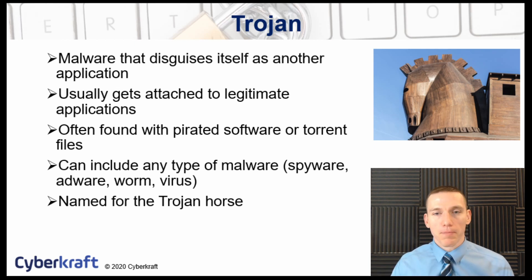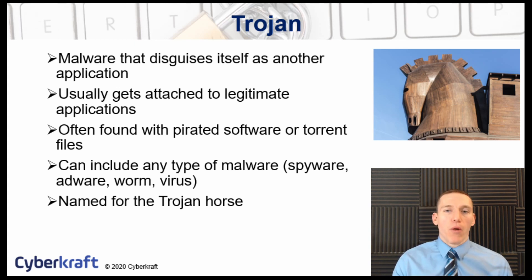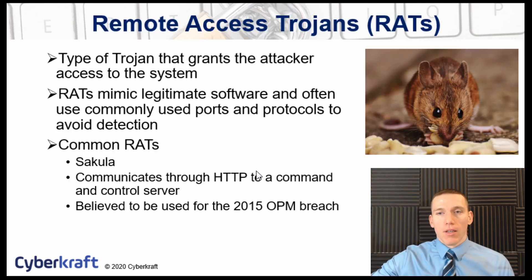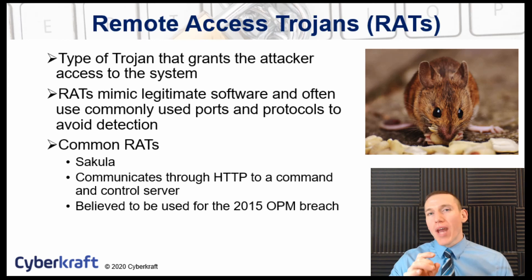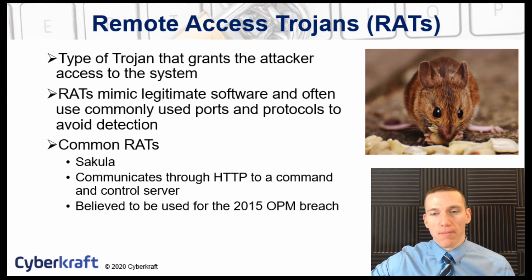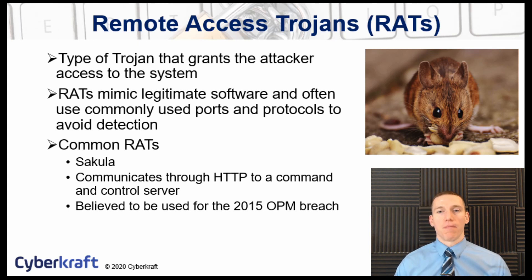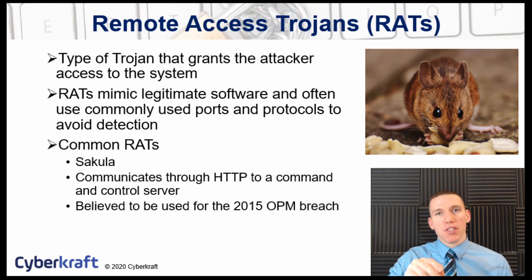Trojans can include any type of malware — spyware, adware, worms, or viruses. A Remote Access Trojan, or RAT, is a specific type of Trojan designed to grant an attacker access to a target system, giving the attacker a backdoor onto that system. RATs mimic legitimate software and mimic the patterns of that software to try and avoid detection by anti-malware and antivirus programs.